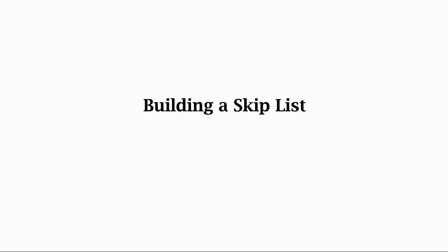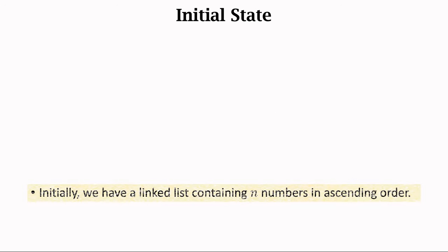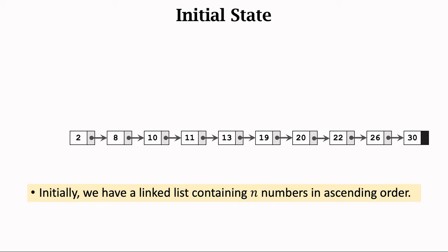Let's begin with building a skip list. Initially, we have a linked list containing n elements. The elements are in ascending order. The biggest shortcoming of a linked list is that random access is not supported. Although the elements are sorted, I cannot perform binary search because I don't know the address of the middle. The search of an element in a linked list is slow — there is no better way than traversing the list, so the time complexity is O(n). Since it is slow to go to the middle, a natural idea is to add pointers from the beginning to the middle, so that we can reach the middle very efficiently.